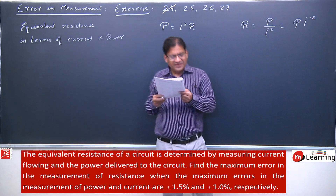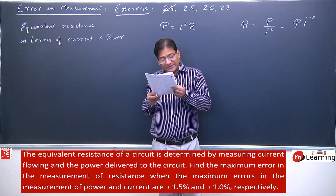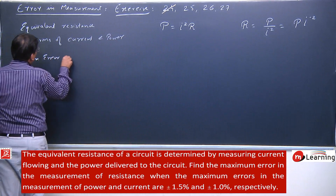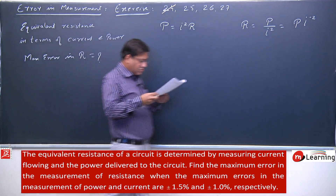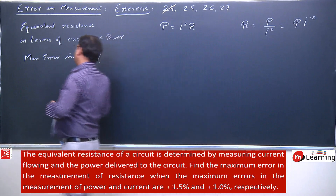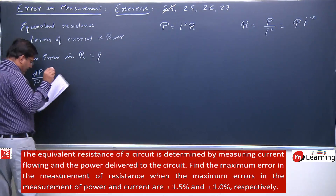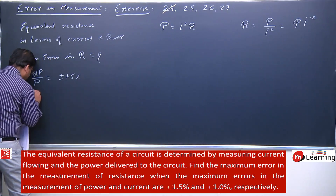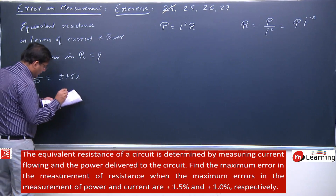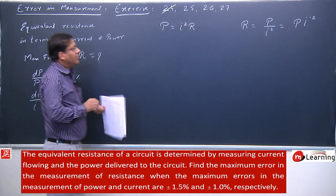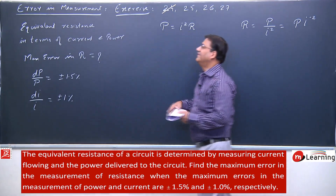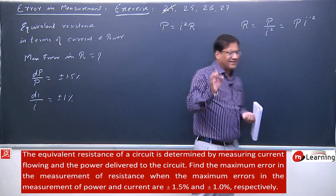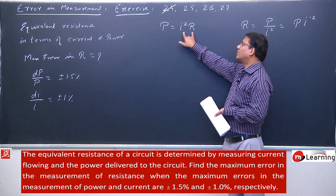This expression should come to mind immediately. We find the maximum error in the measurement of resistance. When maximum error in measurement of power dP/P is plus or minus 1.5 percent, and measurement of current dI/I is plus or minus 1 percent, what is the maximum error in measurement of resistance? Recall the expression R = P · I⁻².